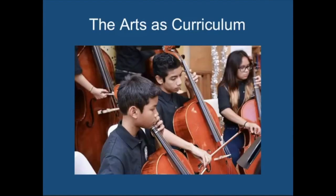In Arts as Curriculum, students develop knowledge and skills in a particular art form. Often referred to as Arts Learning or Art for Art's Sake, the programs are guided by national, state, or local standards for each of the art forms. For example, in music, students learn to read music and how to play an instrument. They learn how music has developed and changed throughout history and engage in improvising melodies or rhythms.